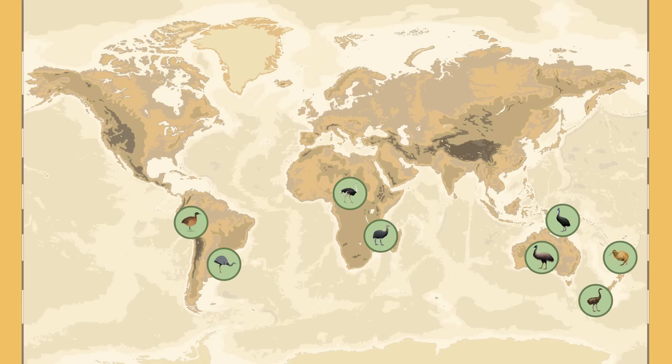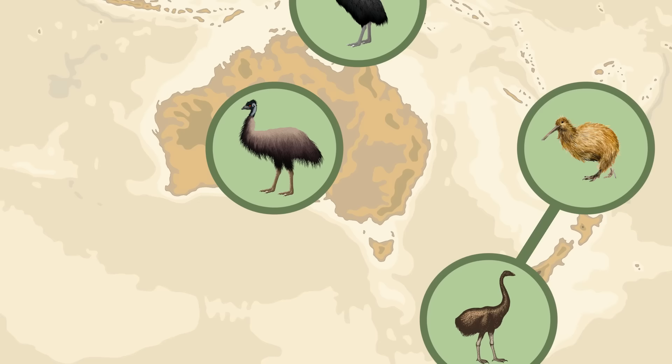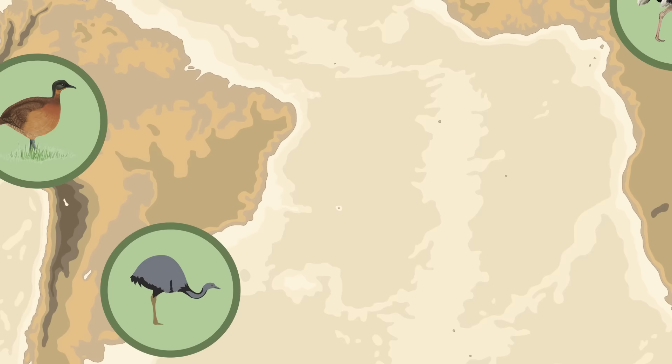If the Moa's Ark model were correct, then ratites that live closest together would be more closely related to each other than those on different continents. So kiwis should have been closely related to moas, because they're both native to New Zealand. And ostriches of Africa should have been close relatives of the extinct elephant birds in Madagascar. Likewise, the rhea should be a close relative of the tinamou, another South American ratite.